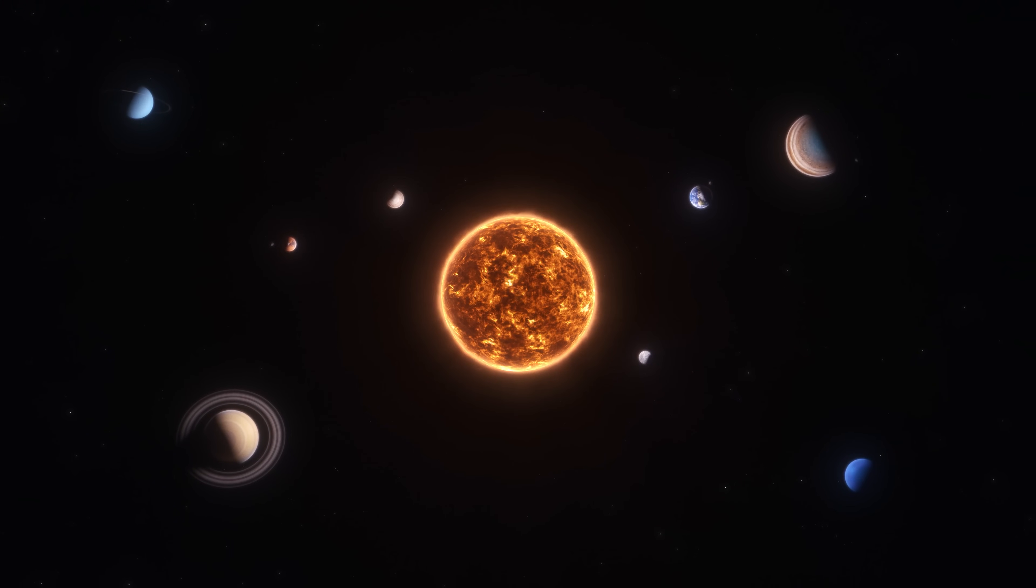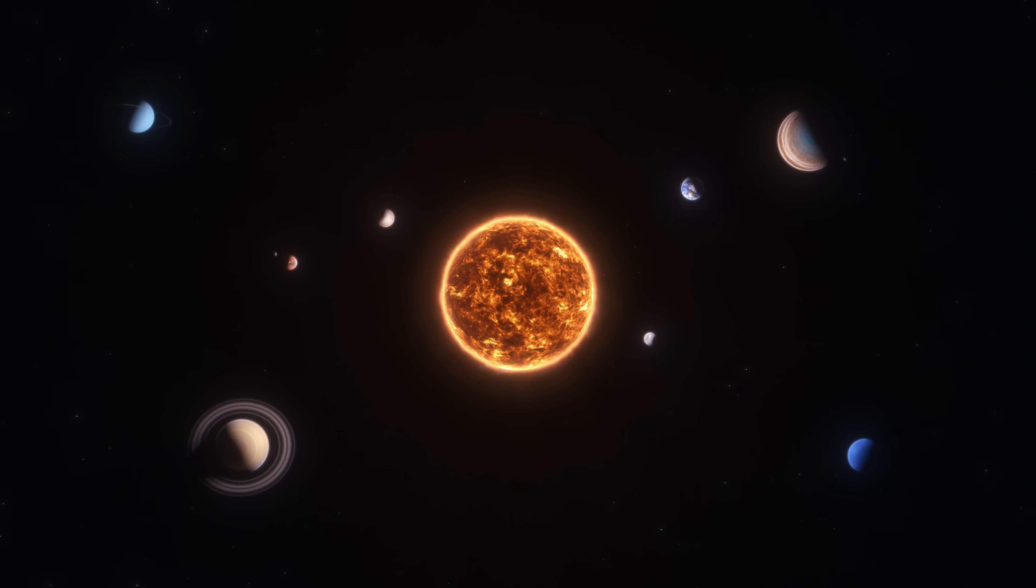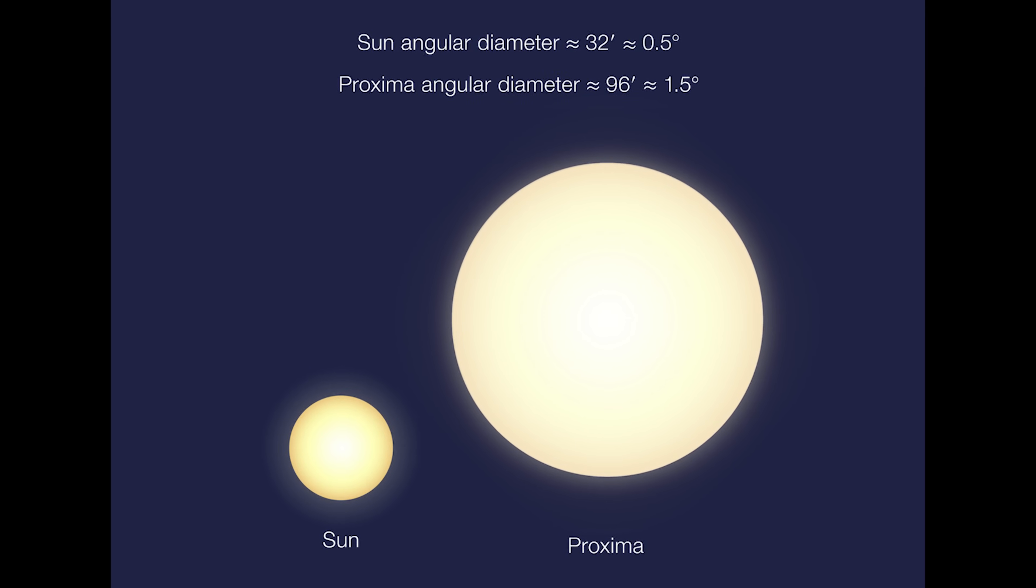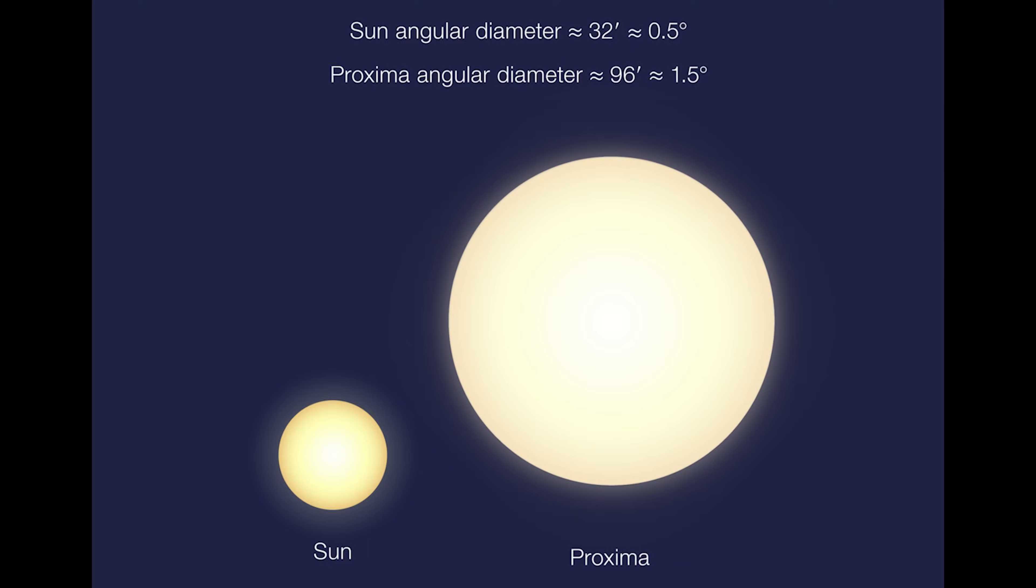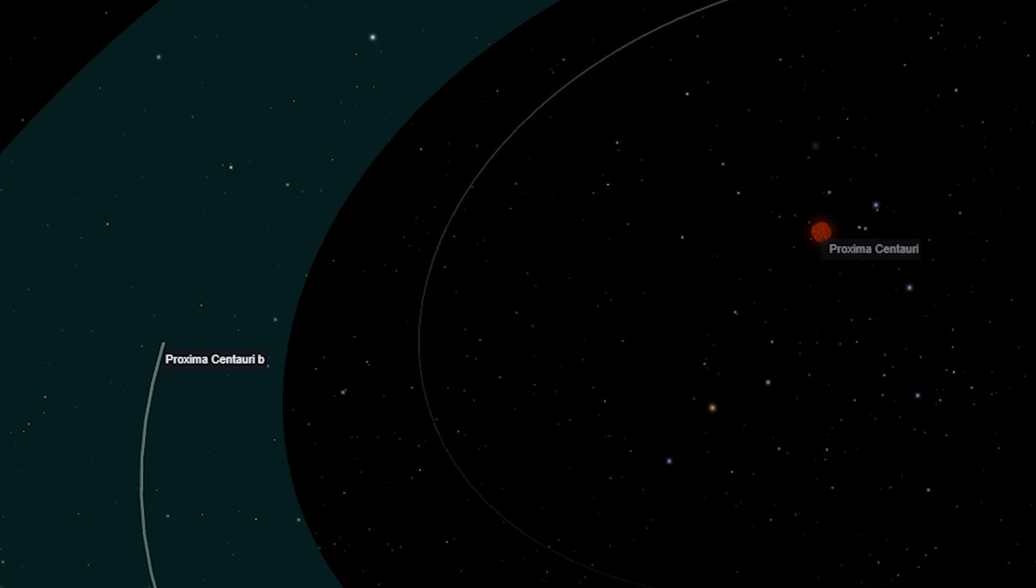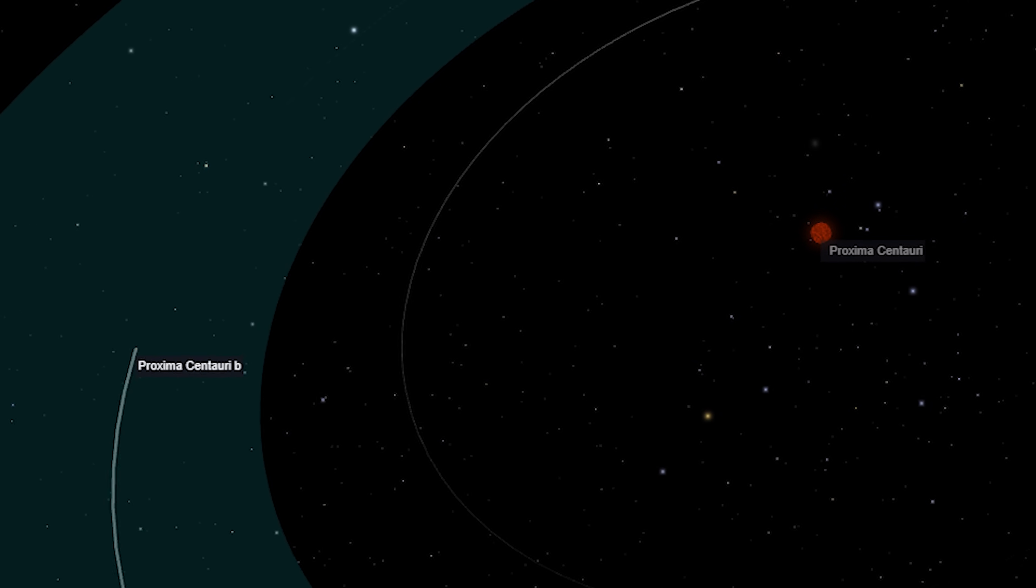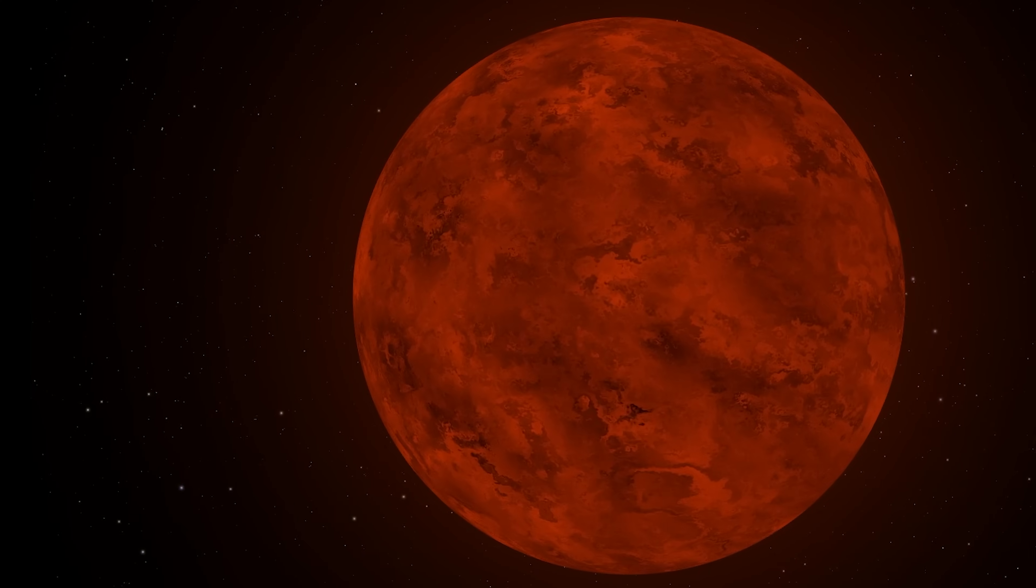While it orbits much closer to its host star than Earth does to the sun, Proxima Centauri is a red dwarf, meaning it emits less energy overall. As a result, Proxima B receives lower levels of radiation, which could be advantageous. That said, there are significant concerns.